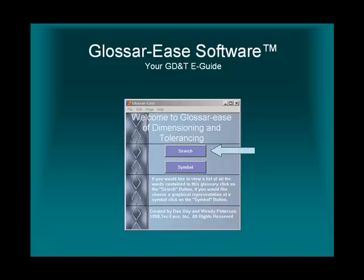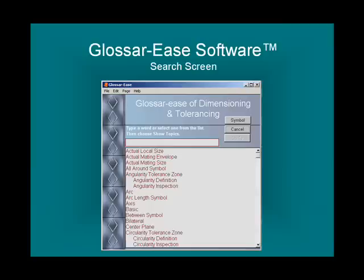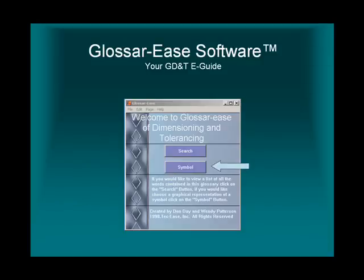Glossaries offers two ways to search for GD&T terms: the search button, which lists GD&T terms in alphabetical order, and the symbol button, which shows all the symbols in the standard.